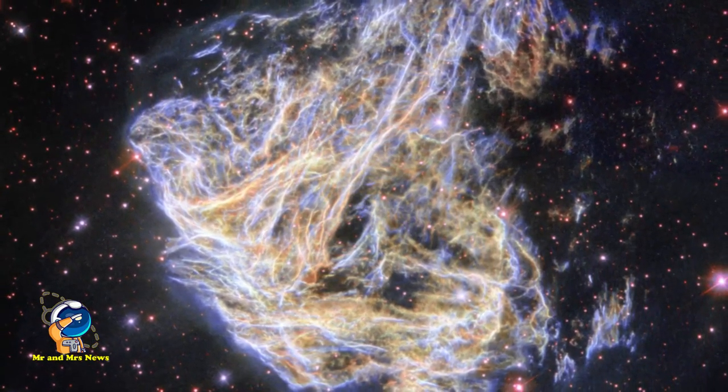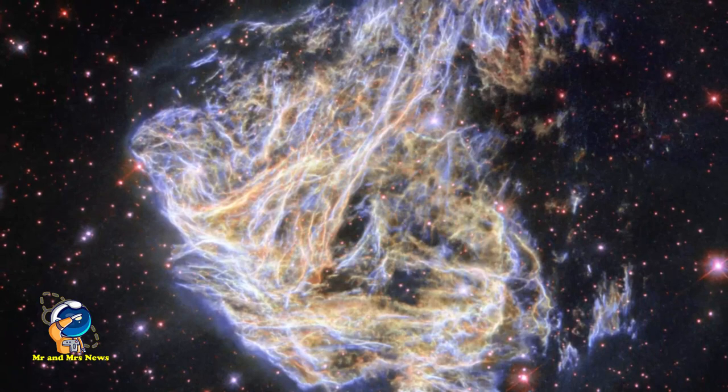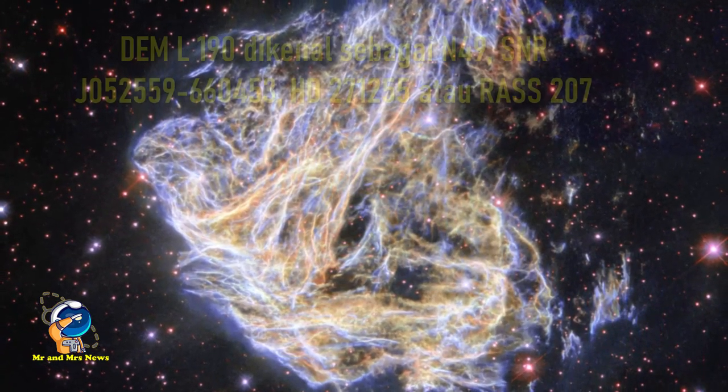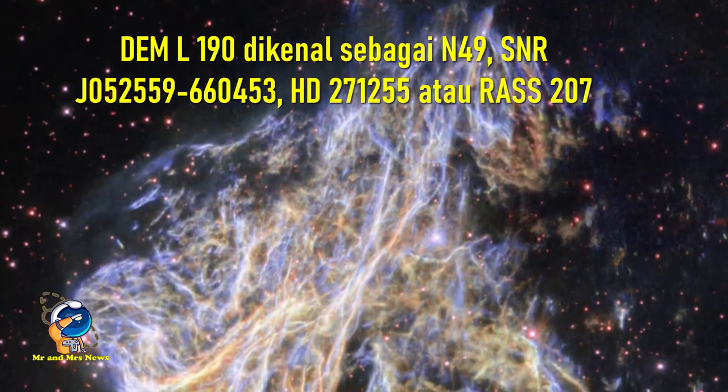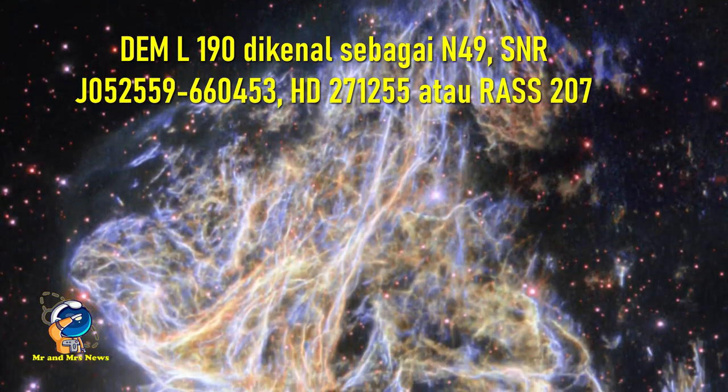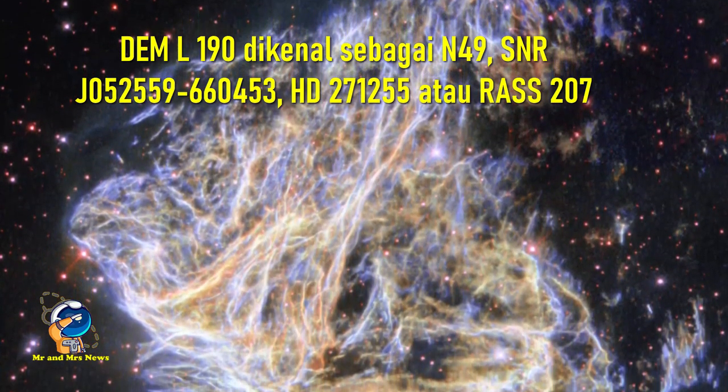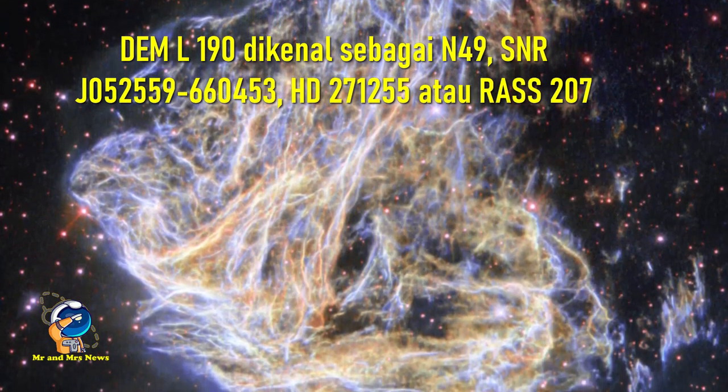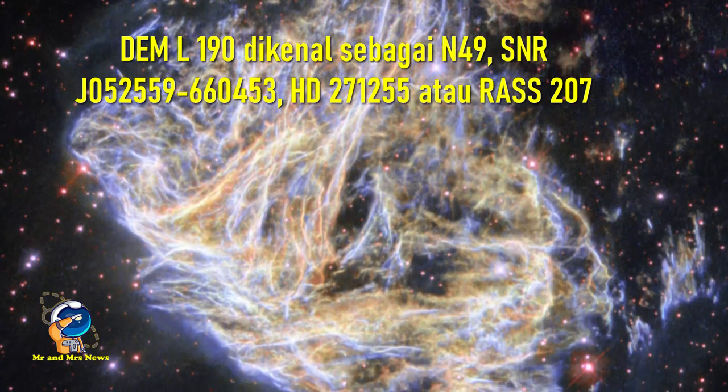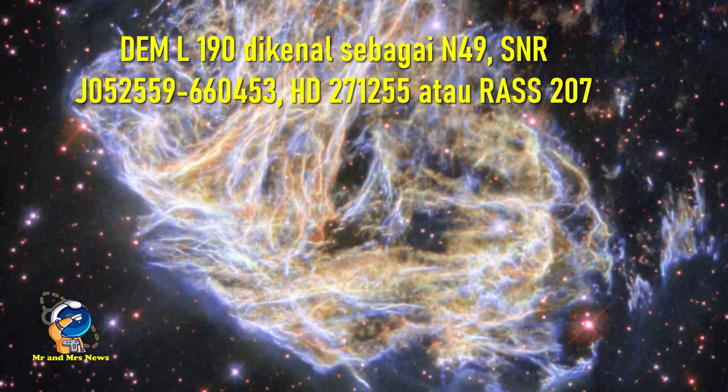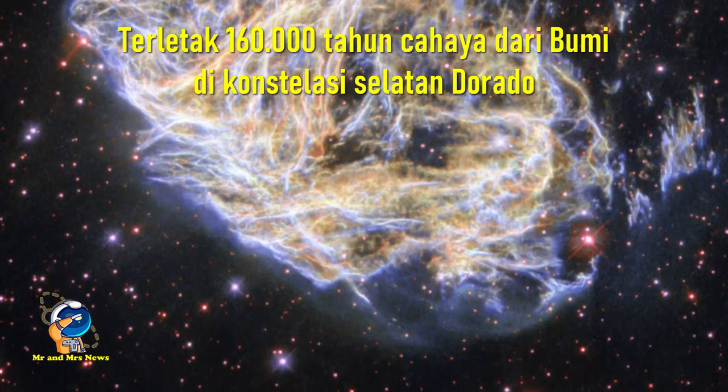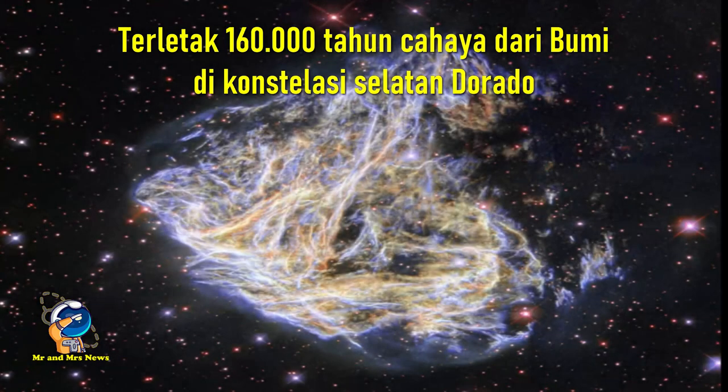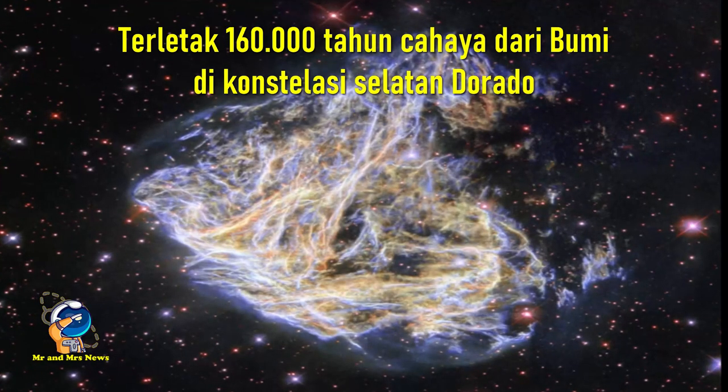DEM L190 adalah salah satu sisa supernova paling terang di Awan Magellan Besar atau dikenal sebagai N49, SNR-J052559-660453, HD 271-1255 atau RASS-207 terletak 160,000 tahun cahaya dari bumi di konstelasi selatan Dorado.